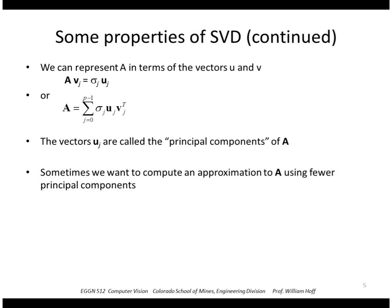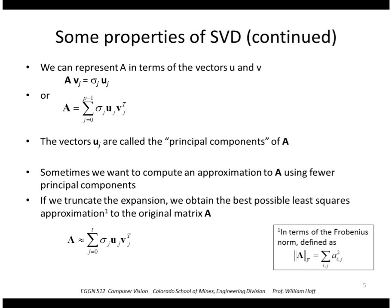Okay, sometimes we want to compute an approximation to A using fewer principal components. So if we truncate the expansion, instead of using all p elements we'll use the first t elements, we'll get a good approximation to the original matrix A. Recall that the sigmas were sorted in descending order, so the first set of sigmas are larger than the remaining sigmas, so we're keeping the highest values of sigmas to form matrix A. And when I say best possible least squares approximation for a matrix, we're using this thing called a Frobenius norm, which is just the sum of the squares of all the elements of A.